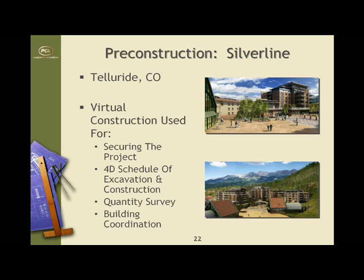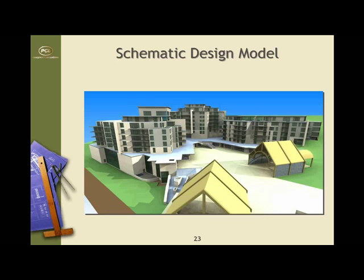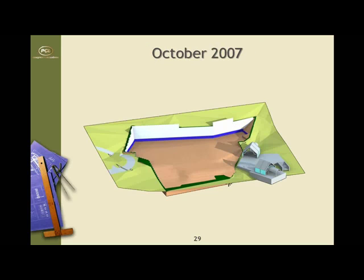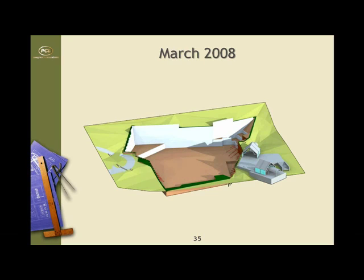Here's another example from our pre-construction phase. We used this again in the pursuit phase, and the big use on this project was the 4D schedule of excavation and construction. Here are some quick renderings of the project. This is actually about a 90-foot hole when it's all said and done — about 170,000 cubic yards — so it's quite an effort to get all the dirt out in an effective and efficient manner. We used this with our shoring subcontractor and our internal team to figure out exactly how we're going to do this.